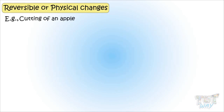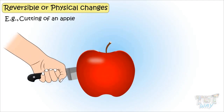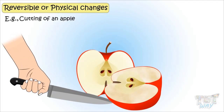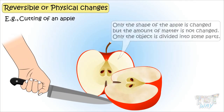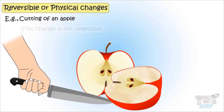Here is another example: cutting of an apple. If an apple is cut into slices, only the shape of an apple is changed. Also, the amount of matter is not changed — only the object is divided into some parts. However, this change is not reversible.